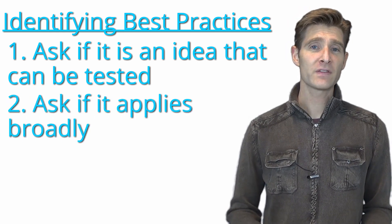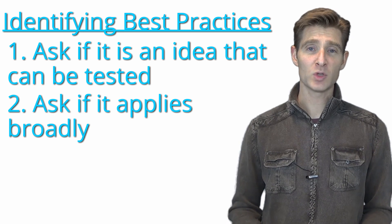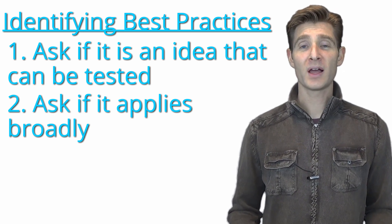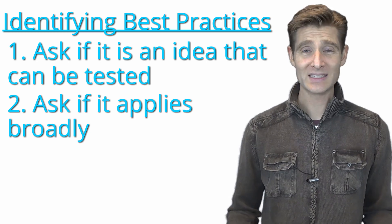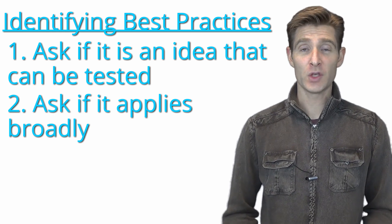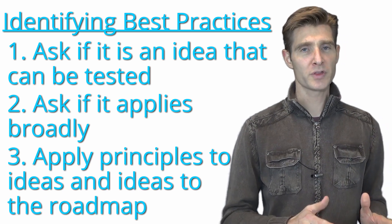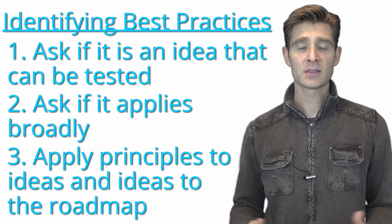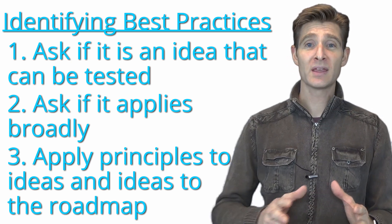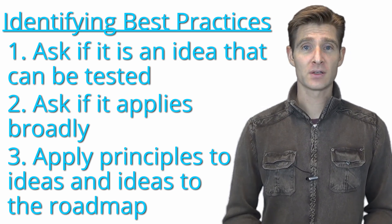Step two is to identify if you have a best practice, a testing theory, or a principle by asking if it applies broadly to multiple sites and multiple industries. If the principle applies to multiple sites, multiple industries, or multiple ideas, then it's more likely that you have a testing theory or a best practice that you can follow and apply. Step three is the most important part: take your principles or your theories and apply them to your ideas so you get better ideas, then put your ideas in a prioritized roadmap so you're getting the best value and most important priorities first.